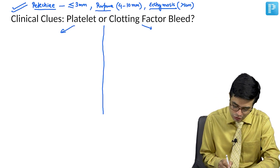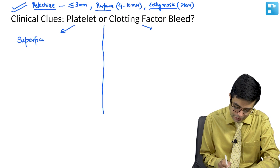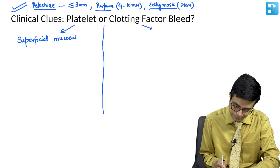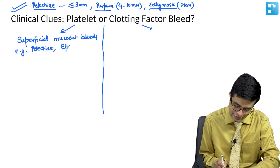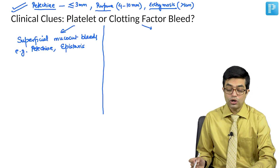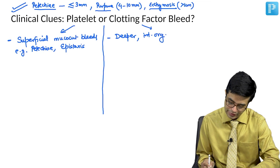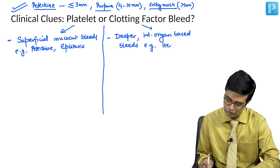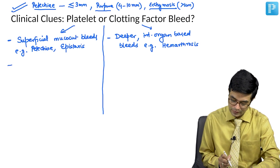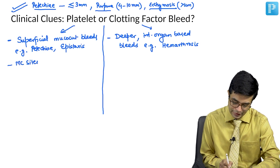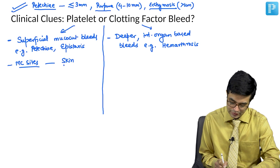Platelet factor bleeds are usually superficial mucocutaneous bleeds — for example, petechiae and epistaxis. Whereas clotting factor bleeds will be in the form of deeper, internal organ-based bleeds. The most common sites for platelet bleeds include the skin, ENT mucosa, and the GI mucosa. Whereas in clotting factor bleeds, the most common sites include soft tissues, muscles — where muscle hematomas can form — and the joints.